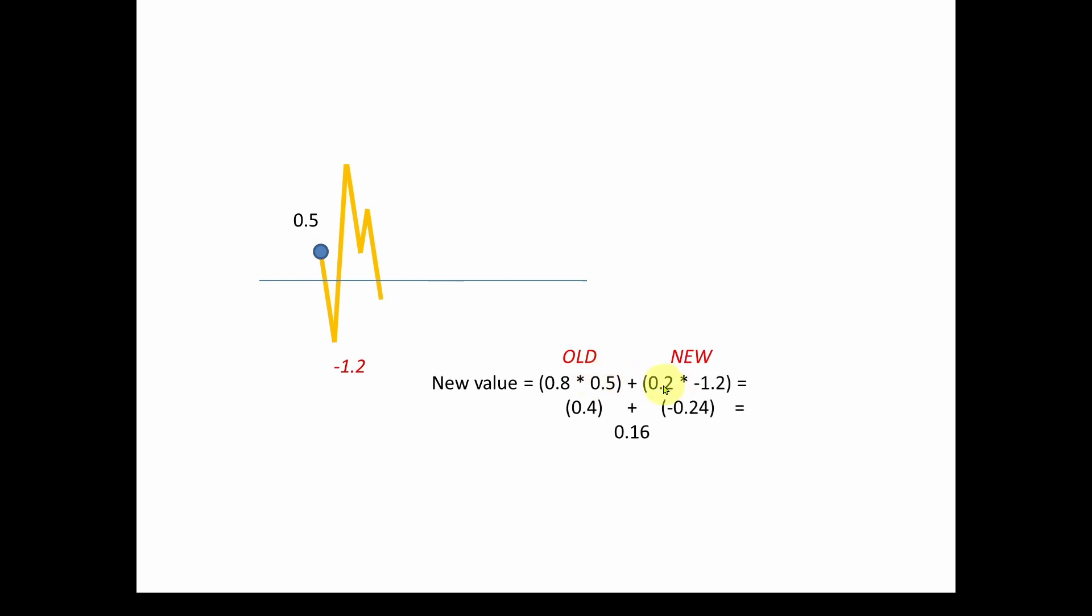plus 20%. So 80 plus 20 equals 100%, plus 20% of the new value. We're only taking, we only have 20% confidence in the new value. And we take 80% of the 0.5 and only 20% of the minus 1.2.